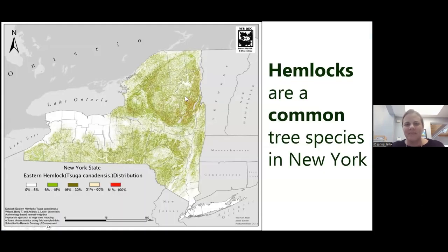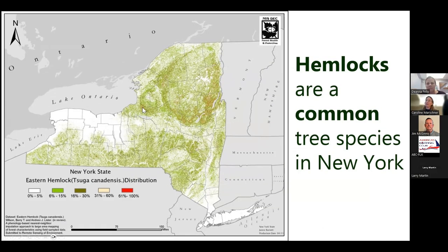Hemlocks are one of the most common tree species in the state. This is a map of where they are — the darker brown is where there's a lot of hemlock. You can see the Tug Hill region, northern Adirondacks, the Catskills — all are our densest hemlock areas, but we actually have a lot in the southern tier and at the southern end of our Finger Lakes.